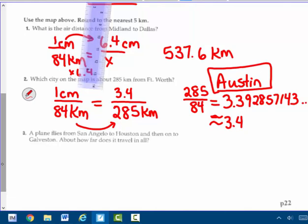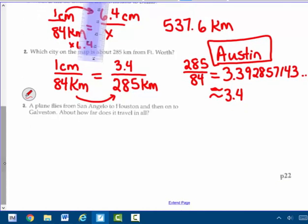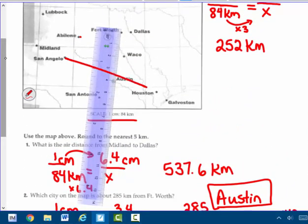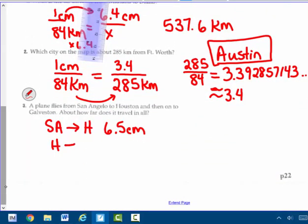A plane flies from San Angelo to Houston and then on to Galveston. About how far does it travel in all? San Angelo to Houston, that's about six and five-tenths centimeters. My ruler's off, so I'm not going to actually show you on that. I got this was about six and five-tenths centimeters. And Houston to Galveston was about one centimeter. You can use a ruler and check that out. We have a total of seven and a half centimeters.